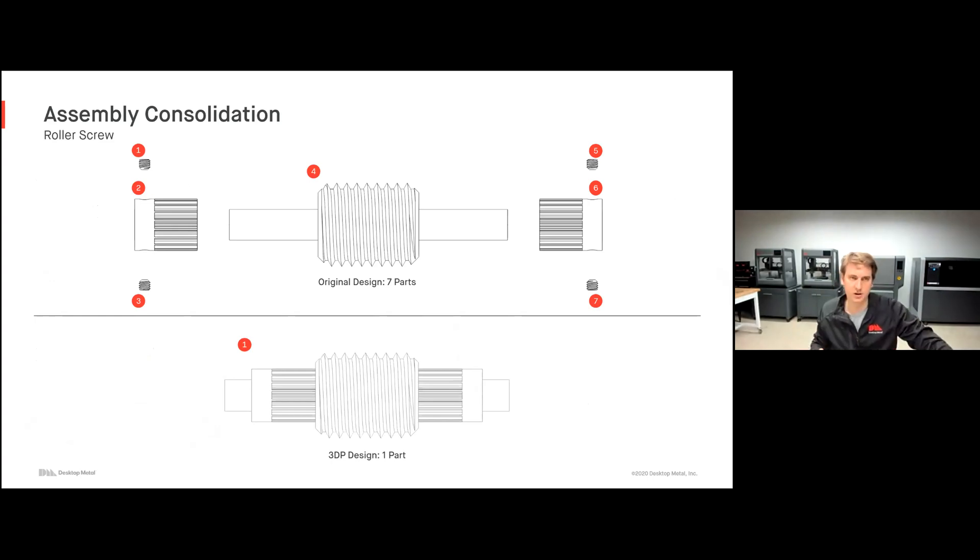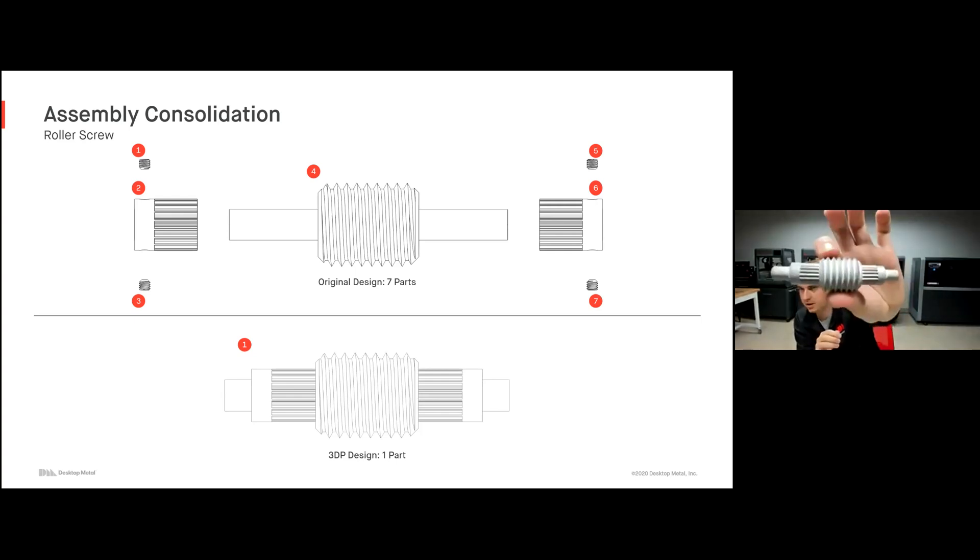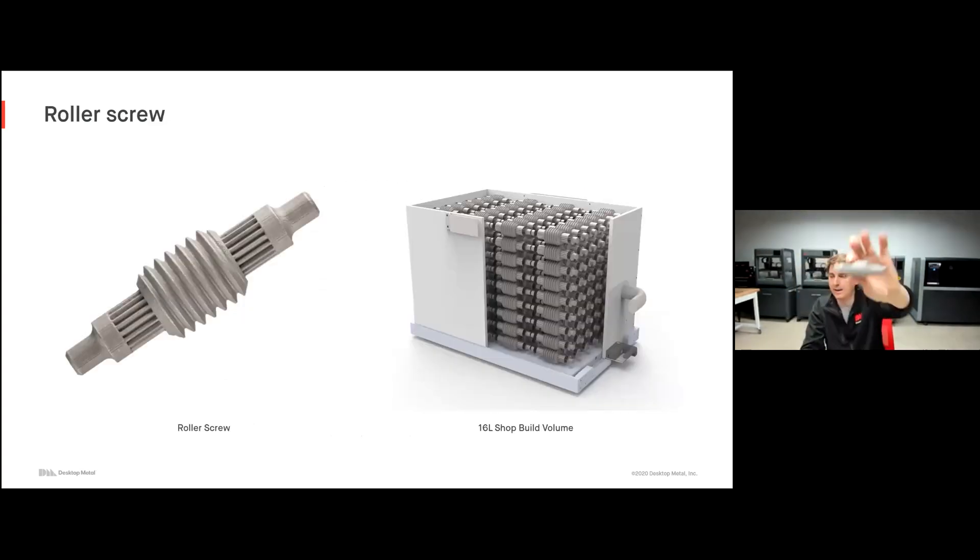Another great example of this is assembly consolidation. So many parts today are designed for their manufacturing method more so than they are their application. It's just because it's easier to make those seven parts individually than it would be to consolidate them all into one assembly. With 3D printing, we have a new design where we can consolidate all those parts into one geometry. And again, it's not just that we're going to print one of these. Now we can print hundreds of these parts per day, thousands of these parts per week or year, and we can actually go to market with geometries that are highly optimized with consolidated assemblies. Of course, reducing our BOMs and making our inventories far easier to manage and actually leading to a higher performance part. You can see an example on screen here, that's a 16 liter build of the Shop System. And you can see I can fit hundreds of these parts in them per build.